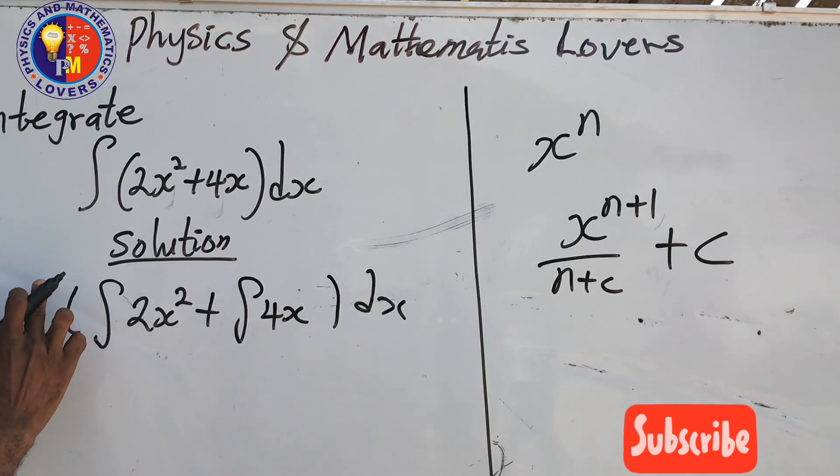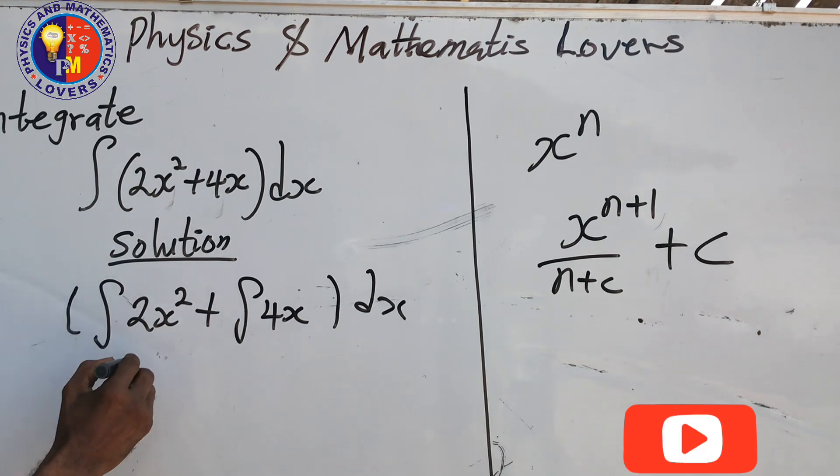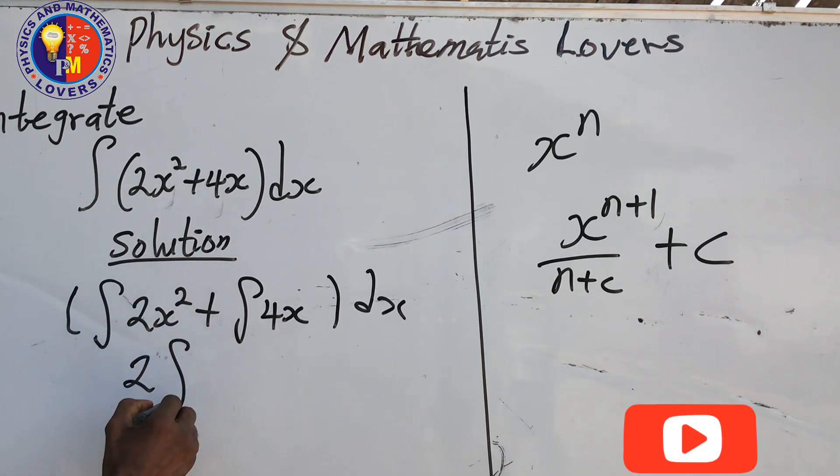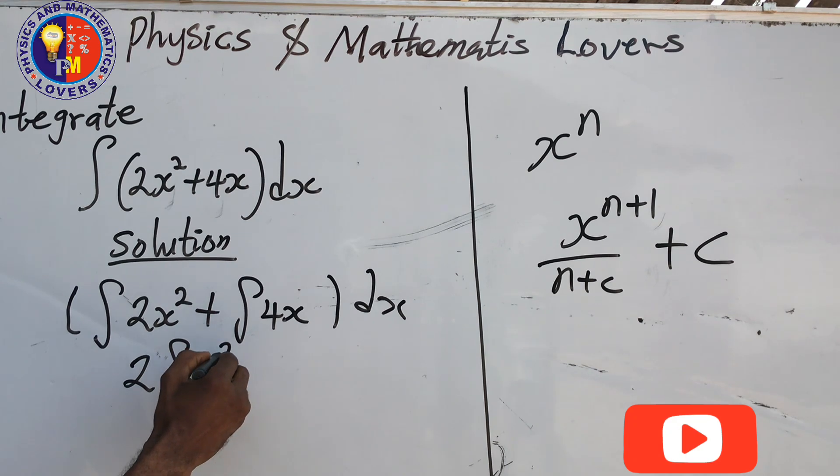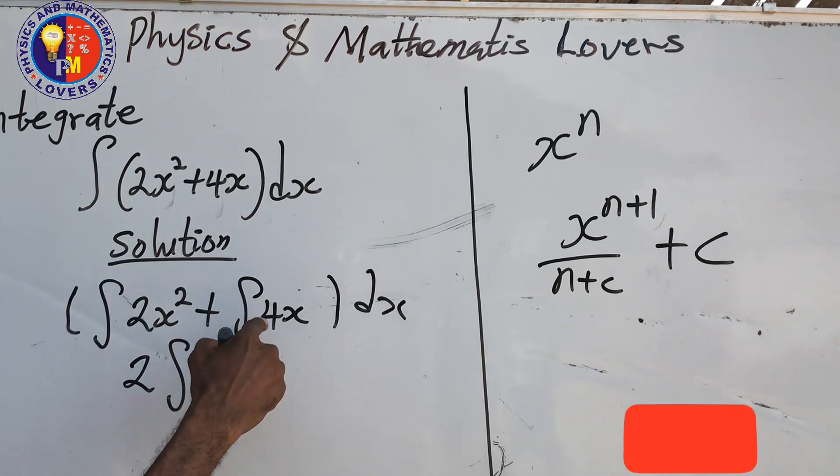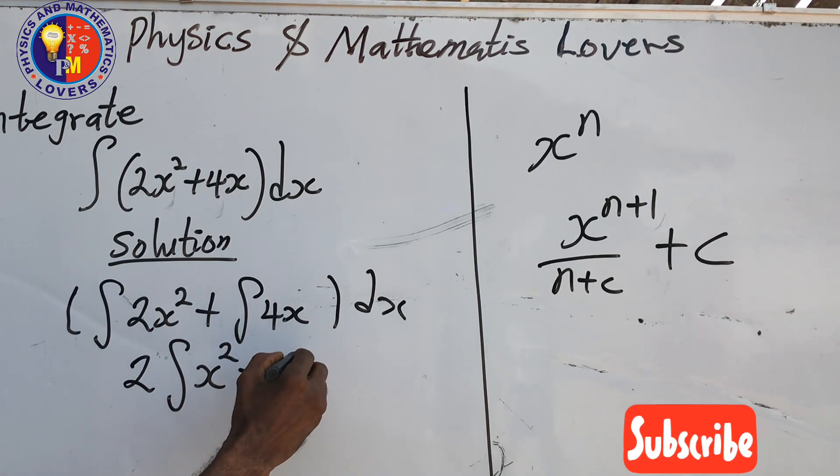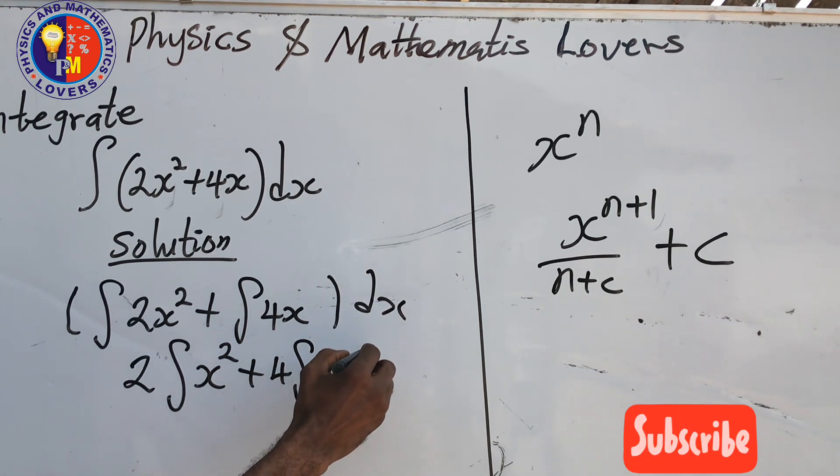This is a constant, we can take it out. We take this 2 out. It can be written as x raised to power 2, then plus take this 4 out, then we have x.